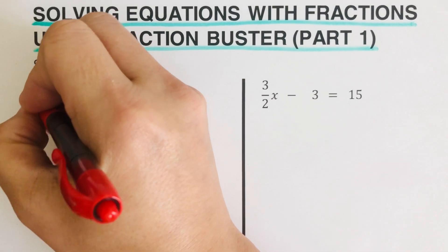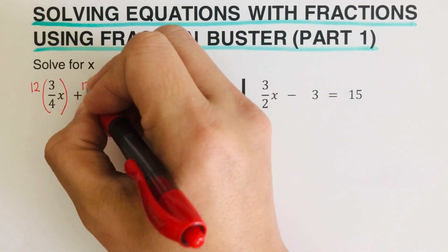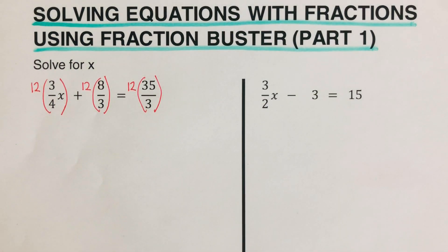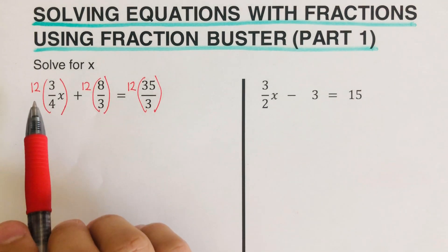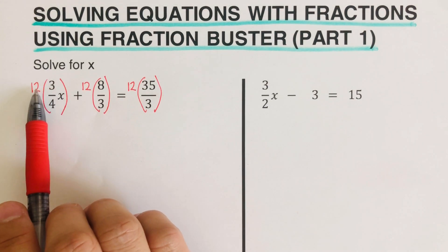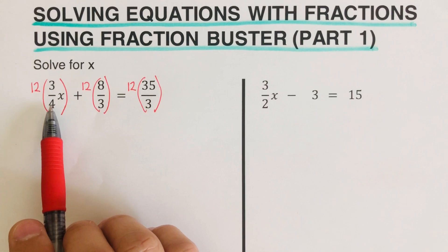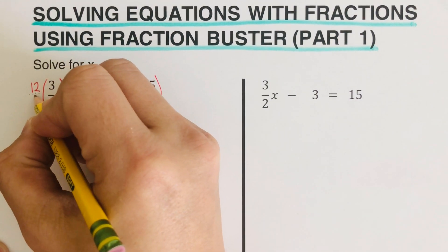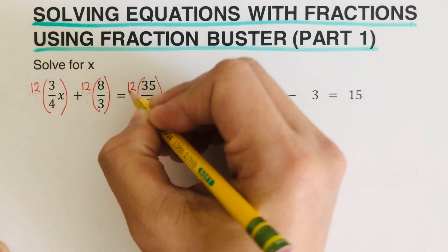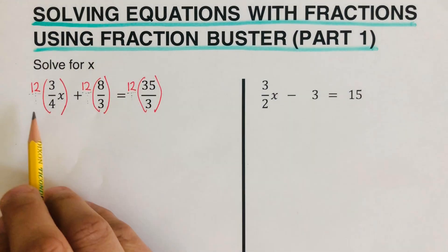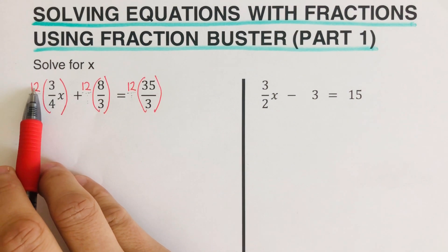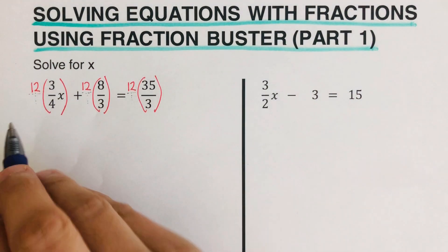I'm going to multiply each term by 12. Now, others might think they should multiply 12 times 3 and 12 times 4 together — that is not the right way. Remember, 12 is a whole number with an invisible denominator of 1. All whole number terms have an invisible denominator of 1. When multiplying, we multiply only across the numerators — so 12 and 3 are the only ones we multiply.